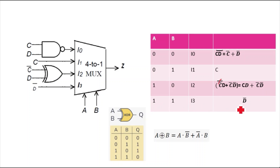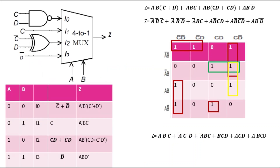So the result becomes C·D plus C-bar·D-bar, and I3 is D-bar. To summarize: I0 = C-bar plus D-bar, I1 = C, I2 = C·D plus C-bar·D-bar, and I3 = D-bar. Now let's move on to finding the Z function.